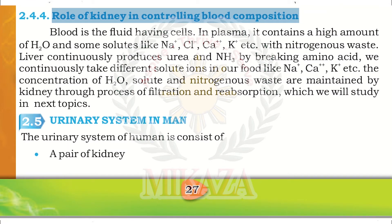The role of the kidney is in controlling blood composition through osmoregulation. Blood is a fluid containing cells and plasma, which contains a high amount of water and solutes like sodium ions, chloride ions, calcium ions, and potassium ions.